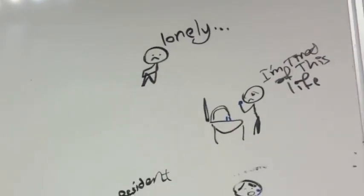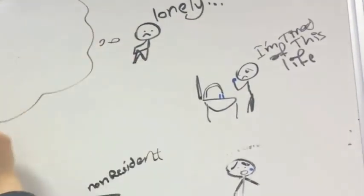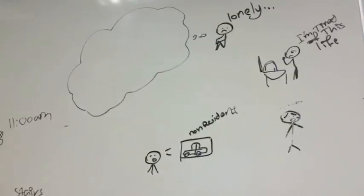Jabir sometimes sits by himself and thinks about how he regrets coming to Kuwait, and dreams about going back to India and buying a new land.